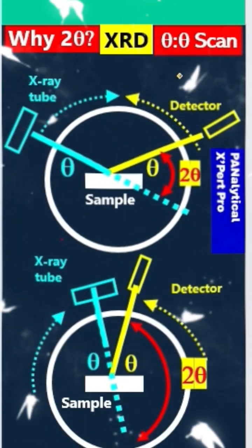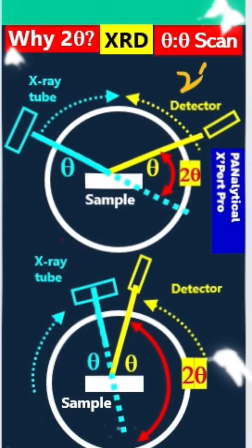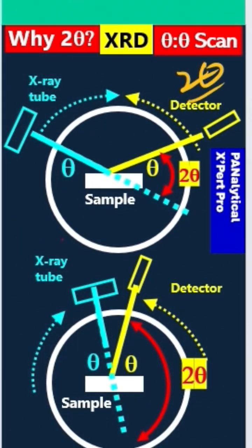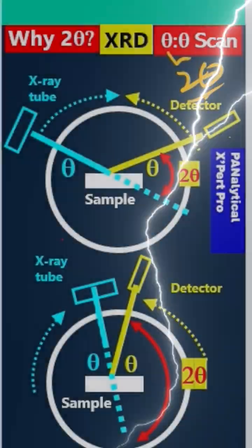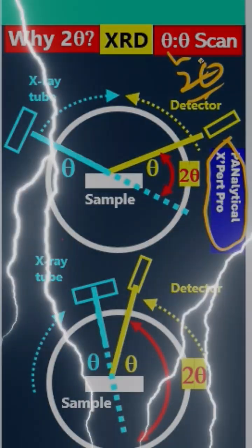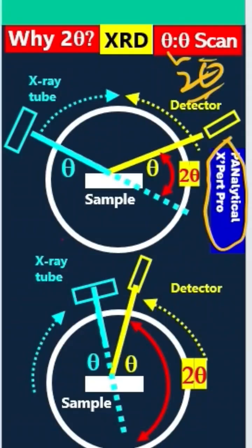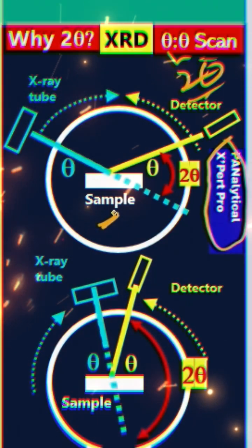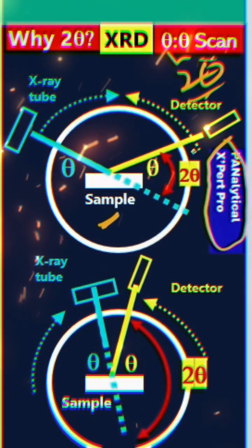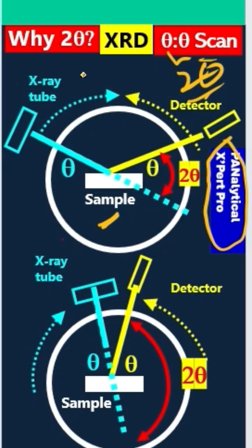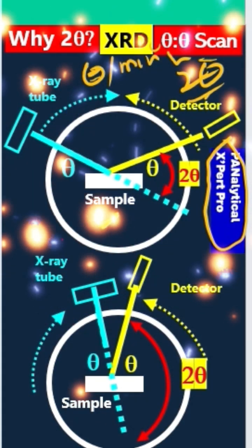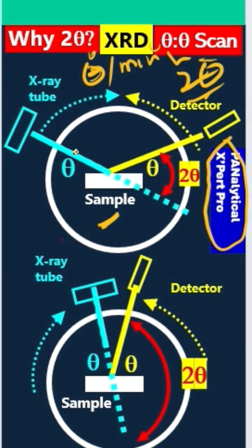Let's discuss why we have two-theta in an XRD pattern in a theta-versus-theta scan. This is the kind of XRD machine that uses this arrangement. In this case, the sample is stationary, but we rotate the X-ray tube as well as the detector at the same theta per minute.